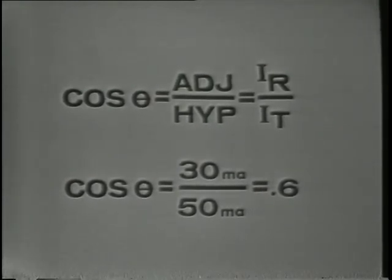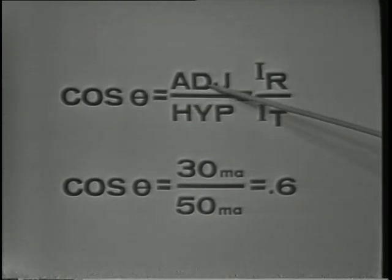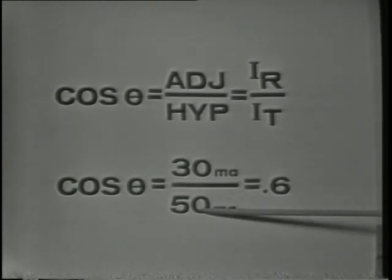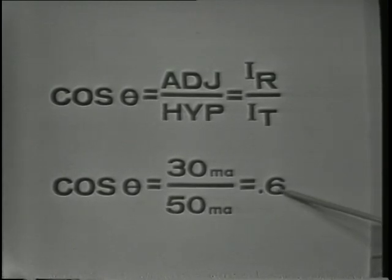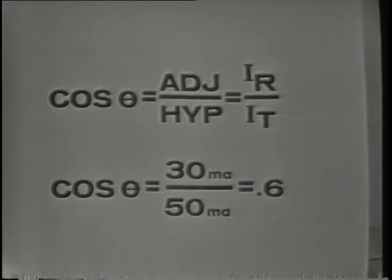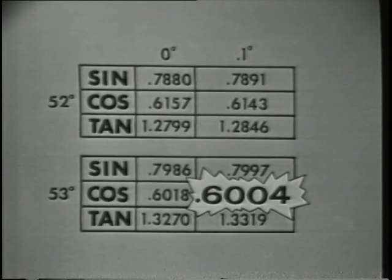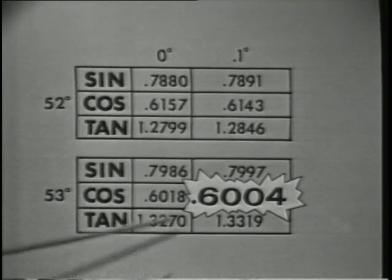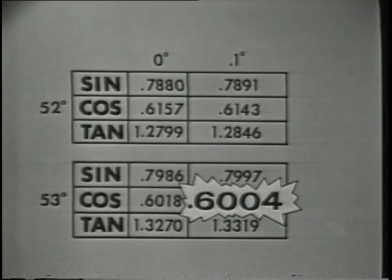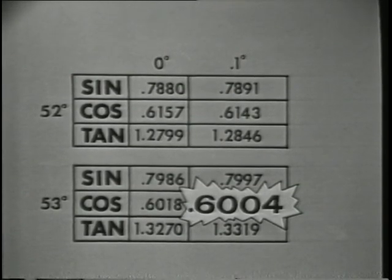For example, if we wish to use the cosine to find angle theta in this circuit, the formula cosine equals the adjacent over the hypotenuse, or IR over IT, which would be 30 milliamps over 50 milliamps, and the cosine of angle theta would equal 0.6. The only way that cosine 0.6 will give us angle theta is in the trig tables. We know the approximate phase angle is 53 degrees, so we go to the trig tables and find the cosine nearest 0.6, which is 0.6004, and we see that the angle is 53.1 degrees. The procedure is very simple and very accurate.